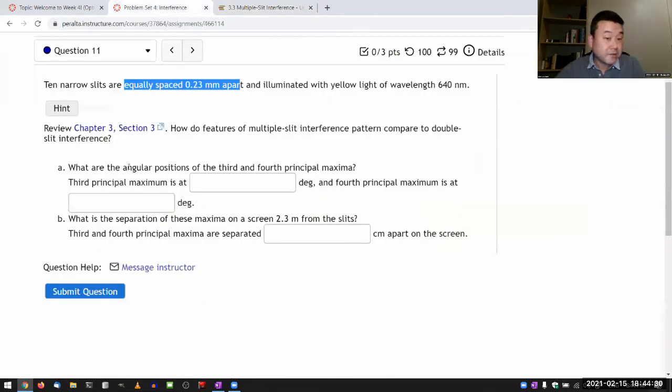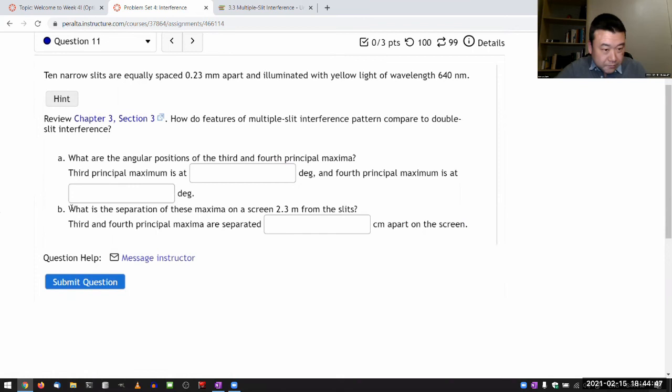So it's exactly the same as if it were double-slit. It's just asking what's the third-order principal maximum, fourth-order principal maximum. You basically use the same expressions that you would use for double-slit. So the fact that it's 10 slits doesn't actually change anything.